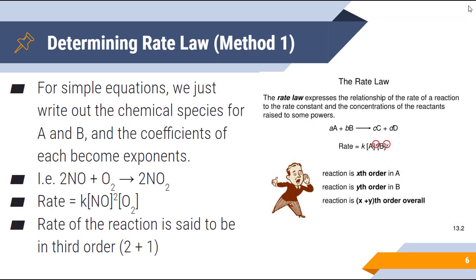For simple equations, we just write out the chemical species for A and B in brackets — because brackets represent concentration — and the coefficients become exponents. For example, with 2NO + O2 → 2NO2, the rate equals K times [NO]² times [O2]. Because there is a coefficient of 2 in front of NO, it becomes NO squared — second order. Oxygen is first order. The total rate of the reaction is third order, since we add the individual orders together.